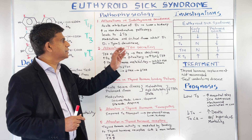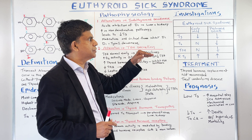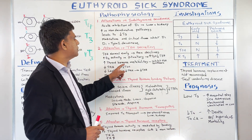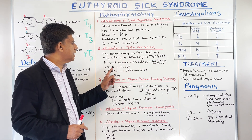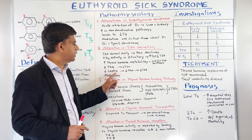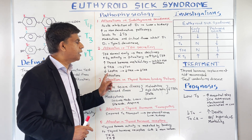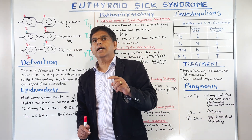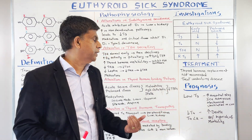Number two: alteration of TSH secretion. TSH is normal early, but then declines. Increased thyroid hormone metabolites inhibit TSH synthesis. Decreased TRH leads to decreased TSH, and decreased leptin also plays a role in reducing TRH and consequently TSH. Medications that affect this include dopamine agonists, steroids, opioids, phenytoin, and carbamazepine.